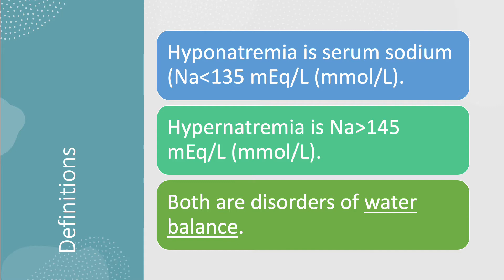First, definitions. What is hyponatremia? Hyponatremia is low sodium — serum sodium less than 135 milliequivalents per liter or millimoles per liter. For sodium, milliequivalents and millimoles are exactly the same. Hypernatremia is above 145 milliequivalents per liter. It is important to emphasize that both hyponatremia and hypernatremia are disorders of water balance. Never think of these as disorders of sodium — it's water.